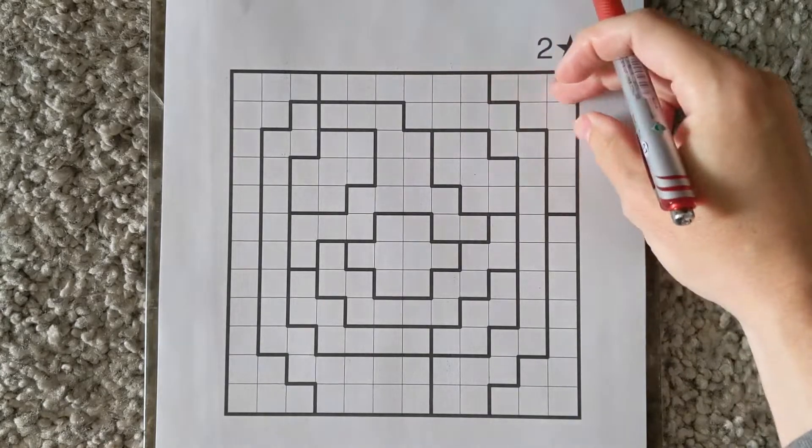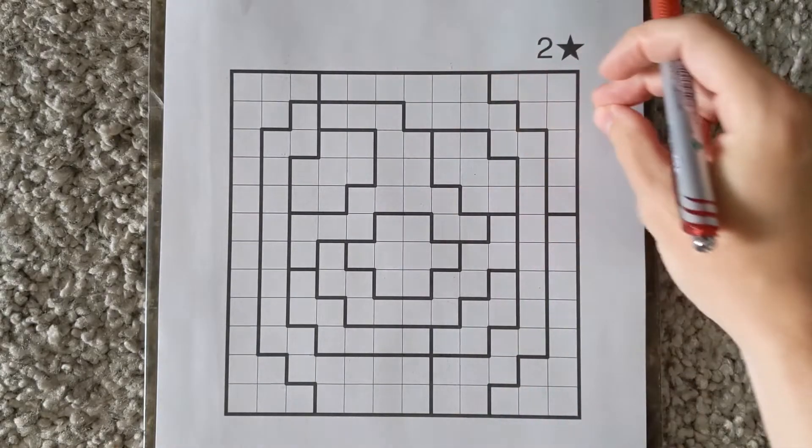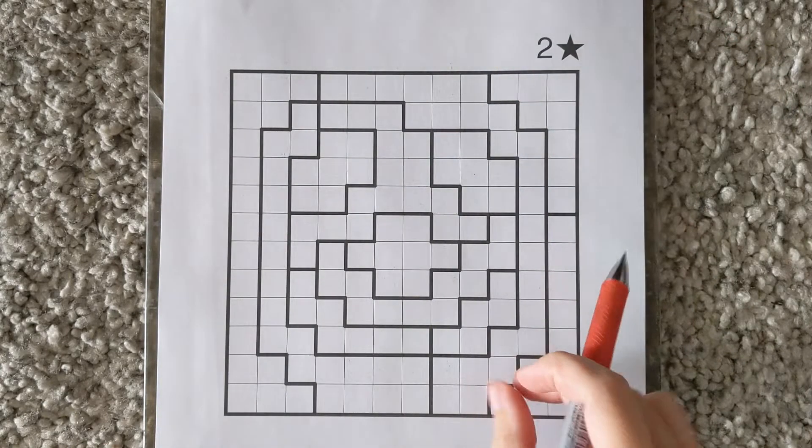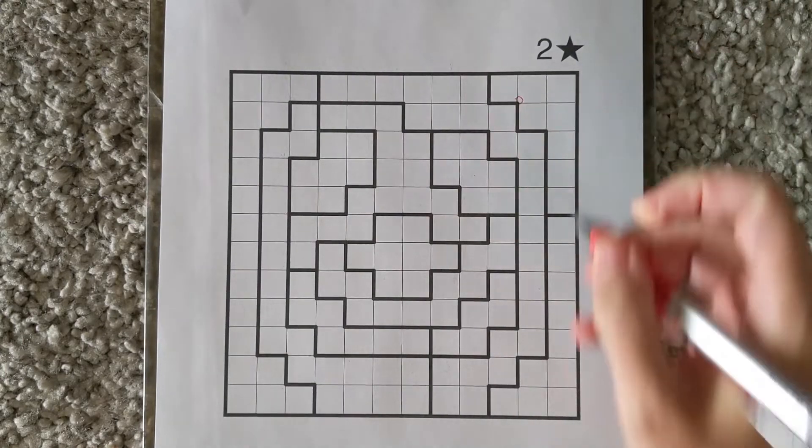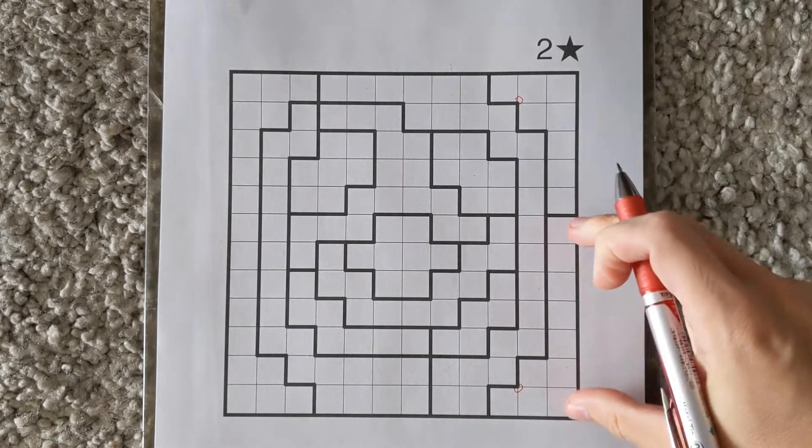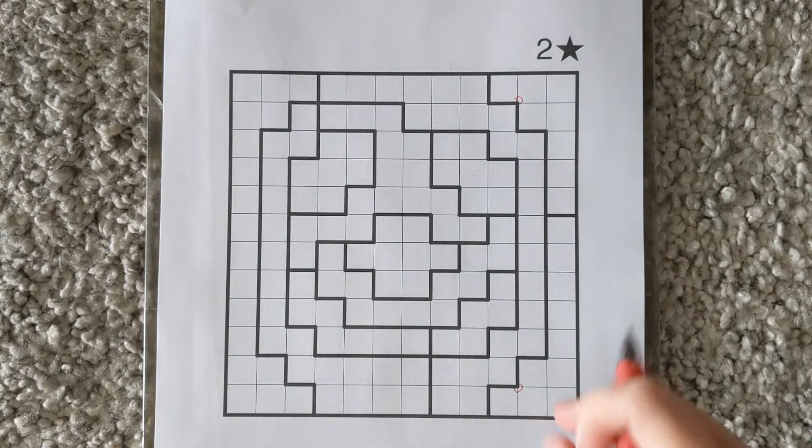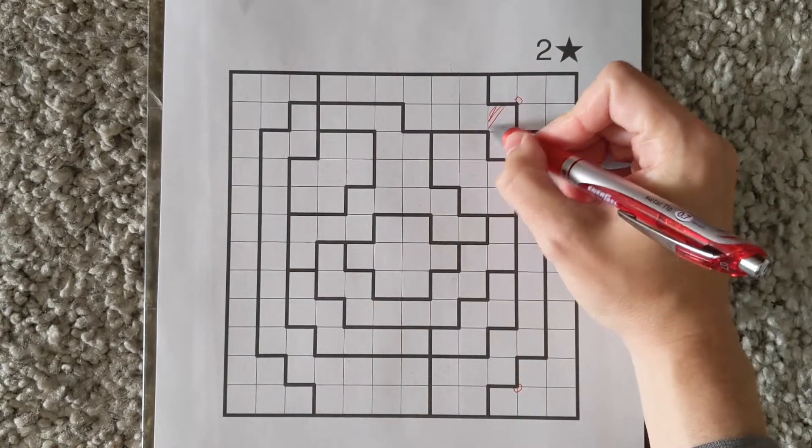On the right side, a thing to notice is that these two regions collectively just have two spots that can take an extra star. So here and here, and that means one, two stars fill up this column, and these two stars fill up these spots.